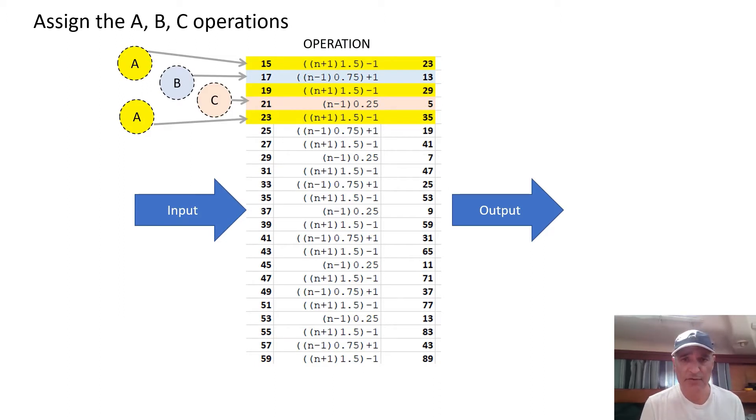And we see there are just three operations acting on the odd numbers, which I'm calling A, B and C. And A is n plus one times 1.5 minus one. And how I know which numbers have which operations is really quite simple. It's to do with the congruence of the number. Is n plus one evenly divisible by four, is n minus one evenly divisible by four, by eight. And so from that you get the operation.